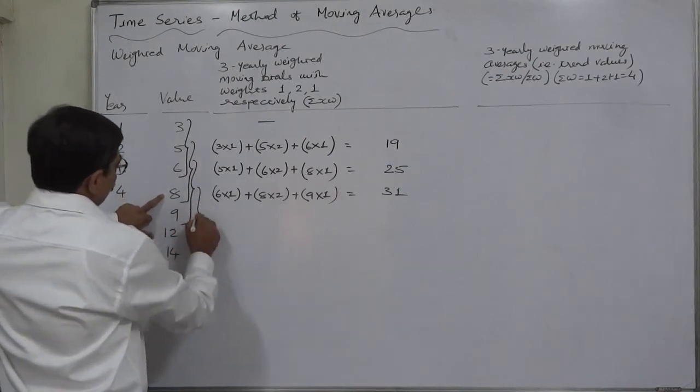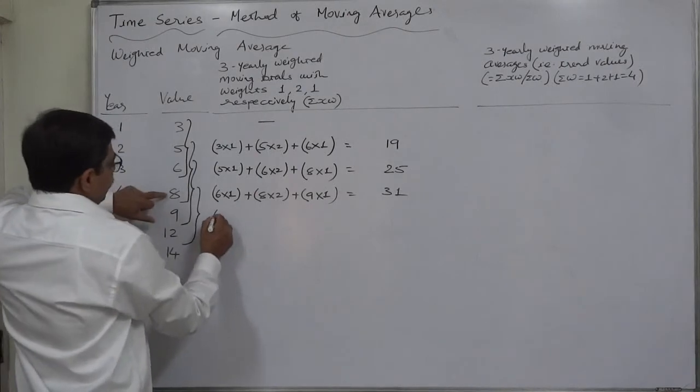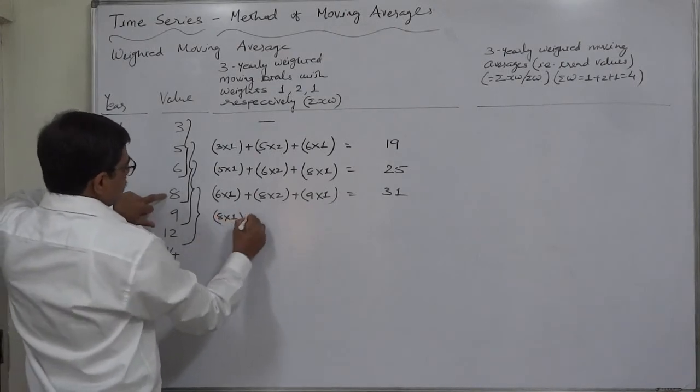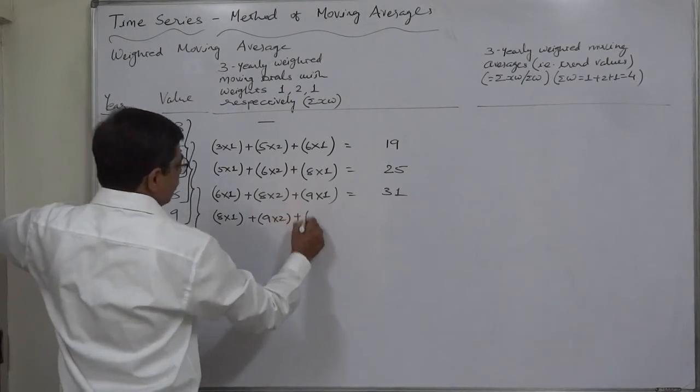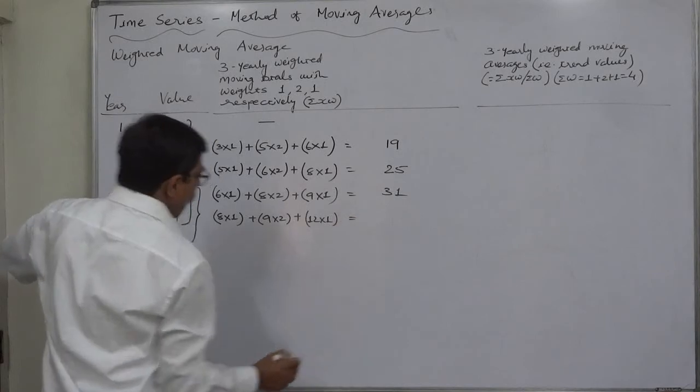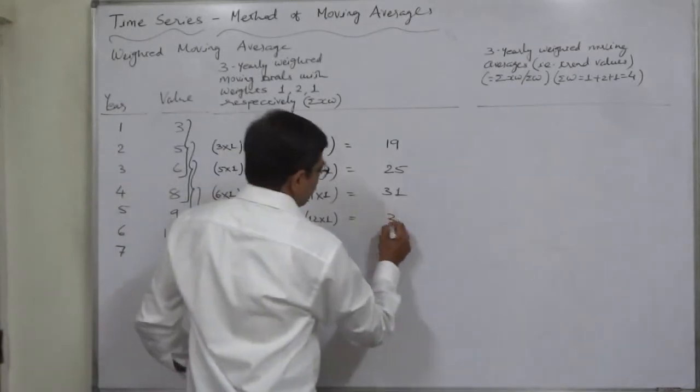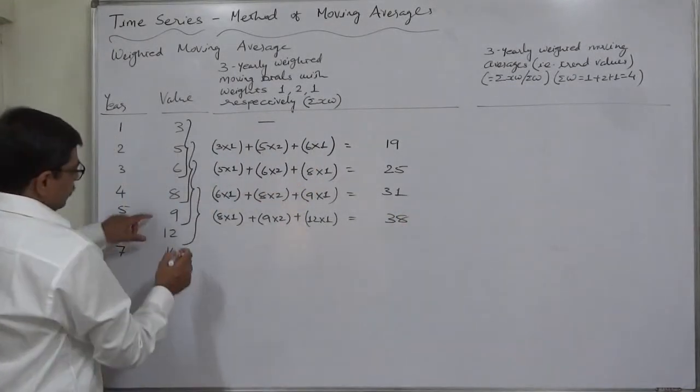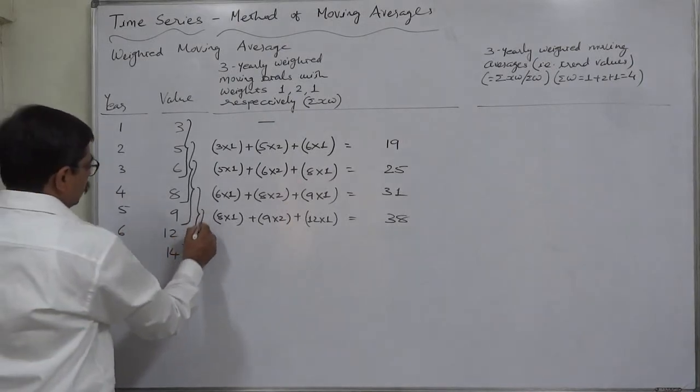Now next total will be of fourth, fifth, and sixth value, and it will be written again in the middle. Fifth value, 8 is first so it is multiplied by 1, 9 is second so it is multiplied by 2, and 12 is third so it is multiplied by 1. 9 into 2 is 18, plus 12 is 30, plus 8 is 38.